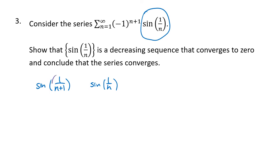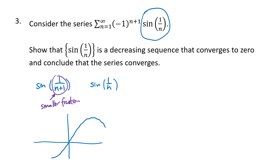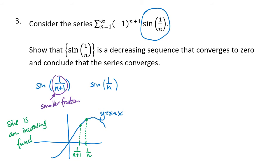Similar to the previous problems, the fraction 1 over n plus 1 is a smaller number. But we also need to account for the sine function. We need to remember what the graph of y equals sine of x looks like near x equals zero. On the number line we have 1 over n, and a little to the left, 1 over n plus 1. Because sine is an increasing function near x equals zero, plugging in a smaller number gives a smaller result, so sine of 1 over n plus 1 is smaller than sine of 1 over n.